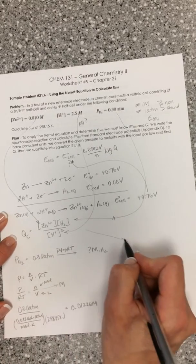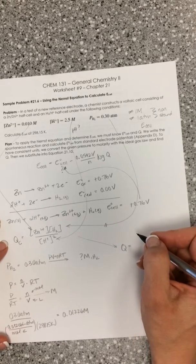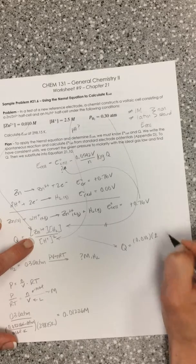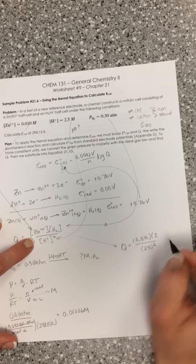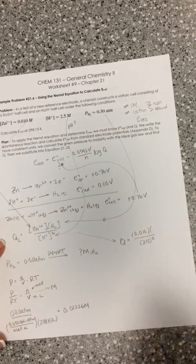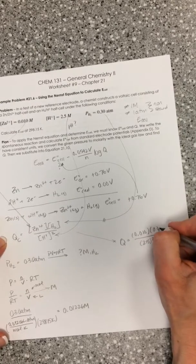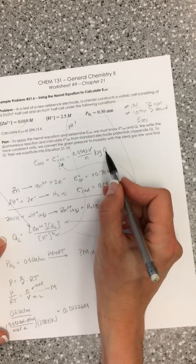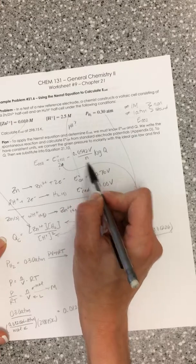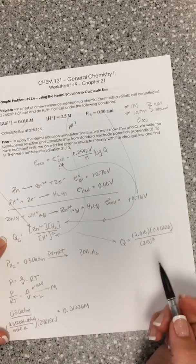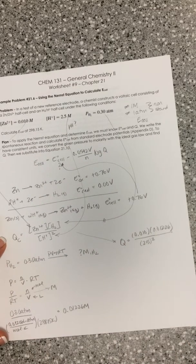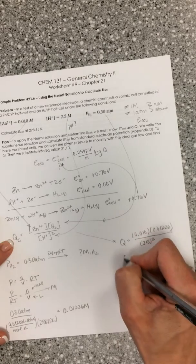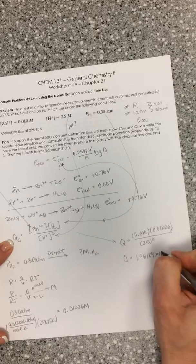Q is going to be equal to zinc ion concentration, which is 0.010, times our hydrogen gas concentration, 0.01226, divided by our hydrogen ion concentration, 2.5 molar squared. You can probably already see from this that Q is going to be a value less than 1. Natural log of values less than 1 are going to be negative. So we're subtracting off a negative value, which means E cell is going to increase. Skewing these concentrations in this way actually is going to give us a stronger driving force to our voltaic cell. Mathematically, Q equals 1.96189 times 10 to the minus fifth.